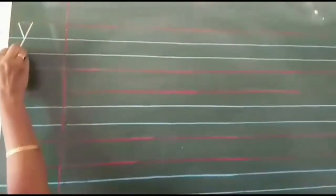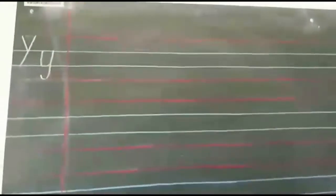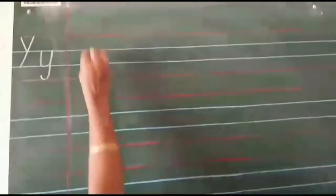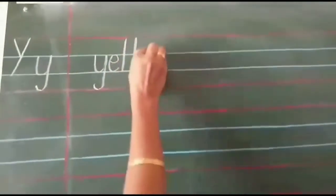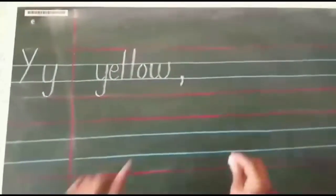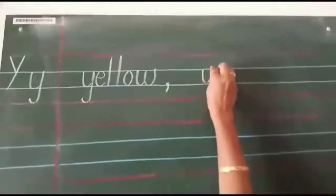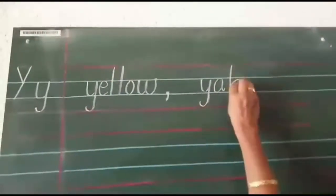Now children, we will stop writing and take a new page because we don't have a place to write here. Take a new page. First line, we will write capital letter Y, script letter Y. Y for yo-yo, Y for yellow, Y for yak. So we will write the spelling of yellow: Y, E, L, L, O, W — yellow. Comma, one finger space. Y, A, K — yak. Okay.